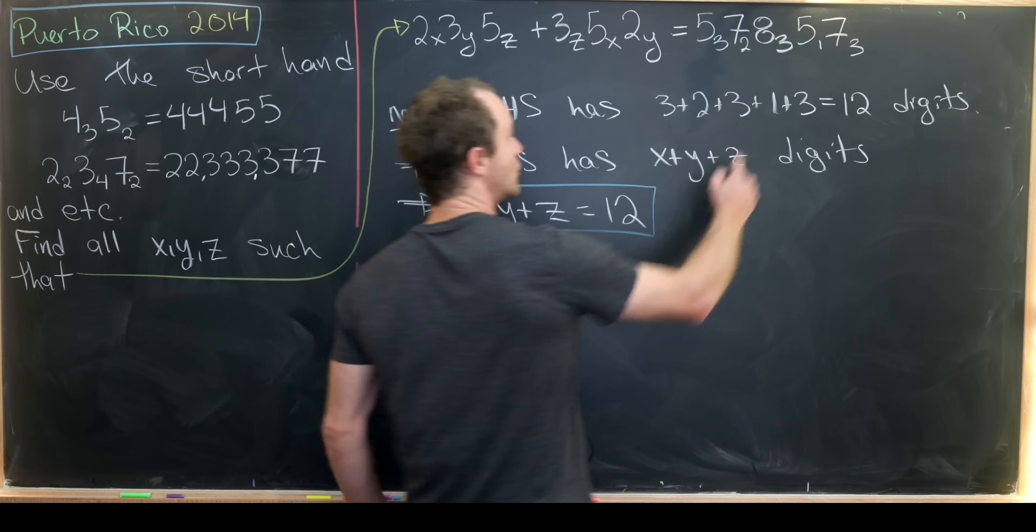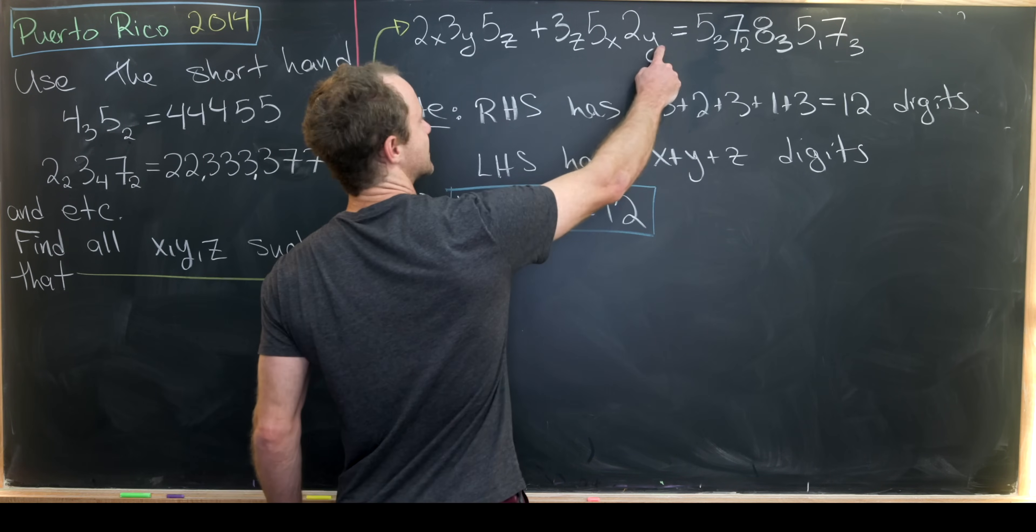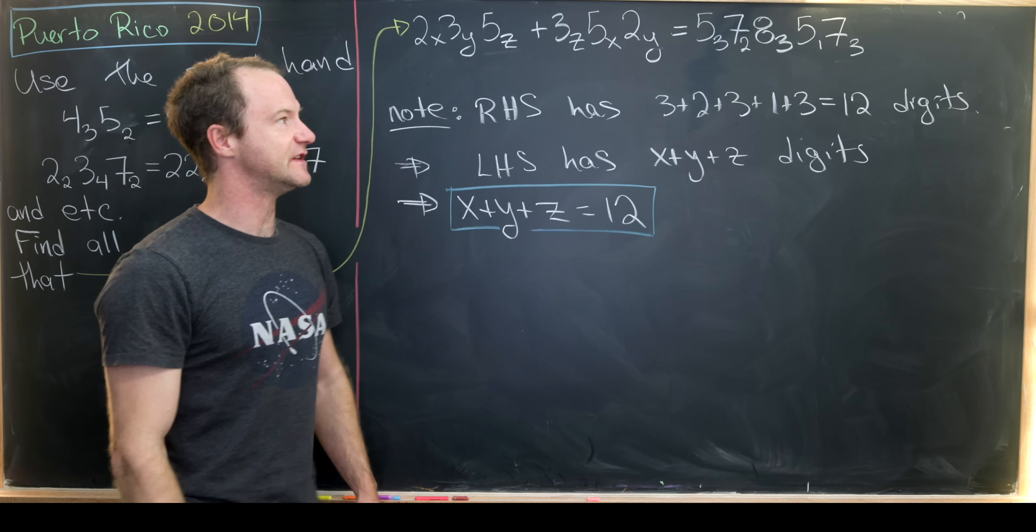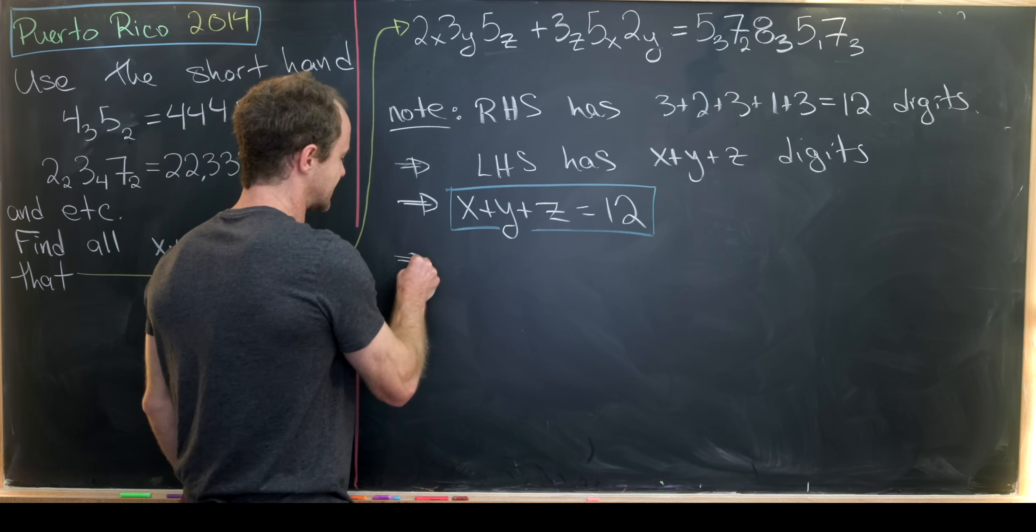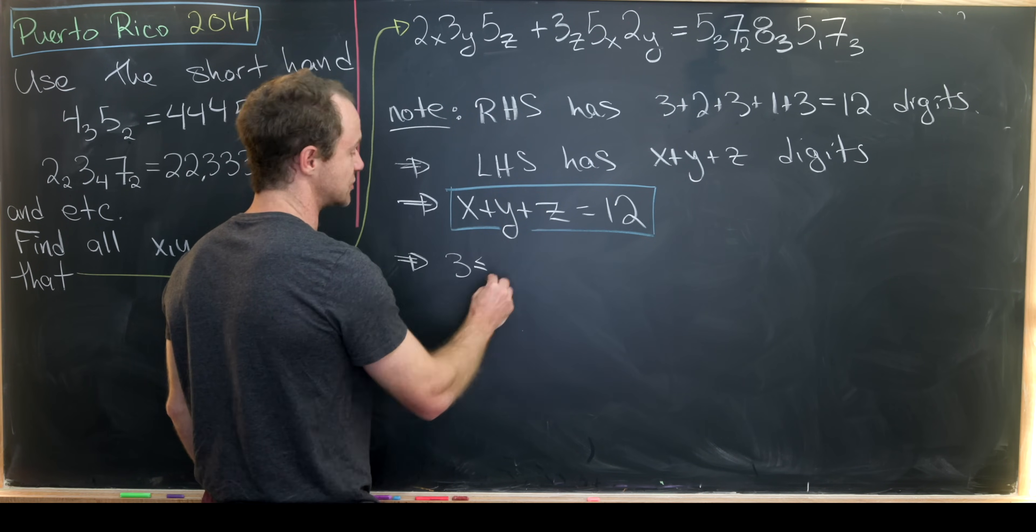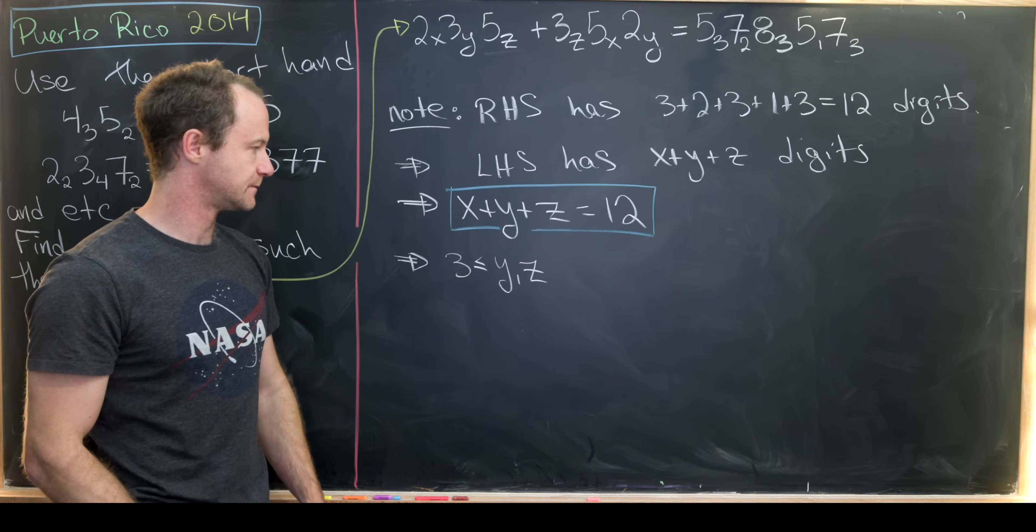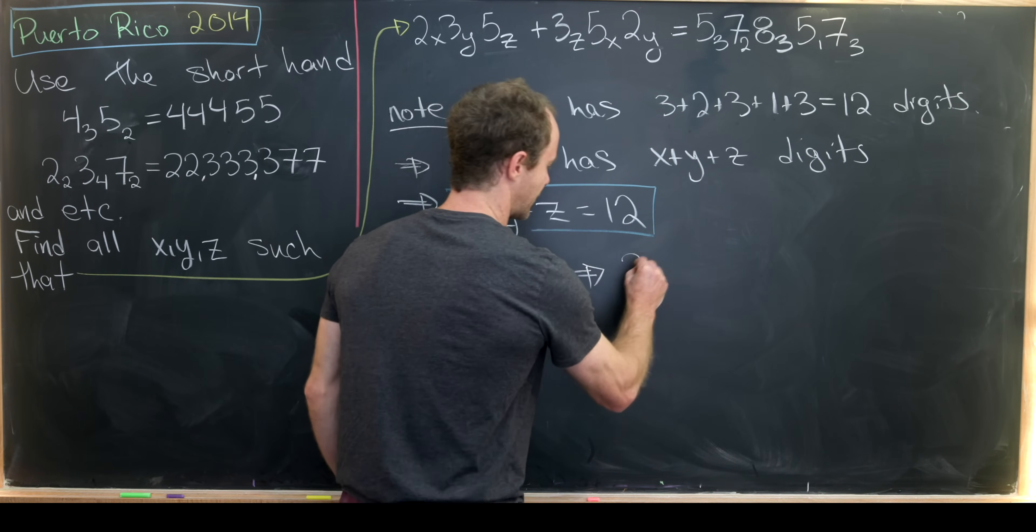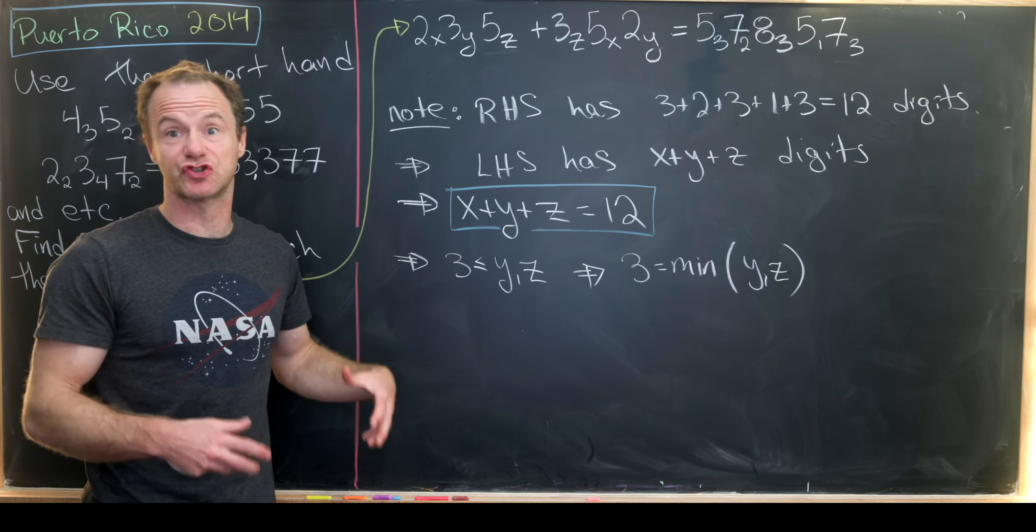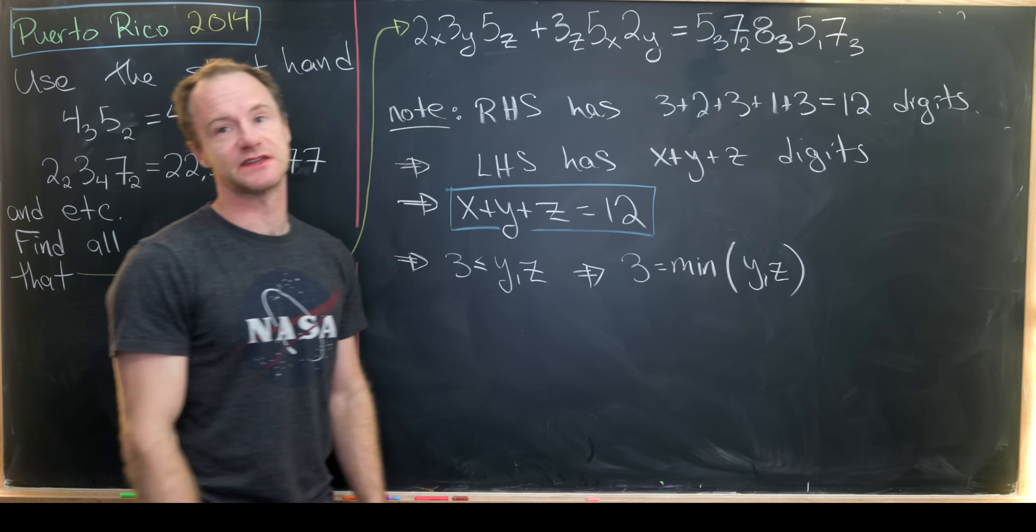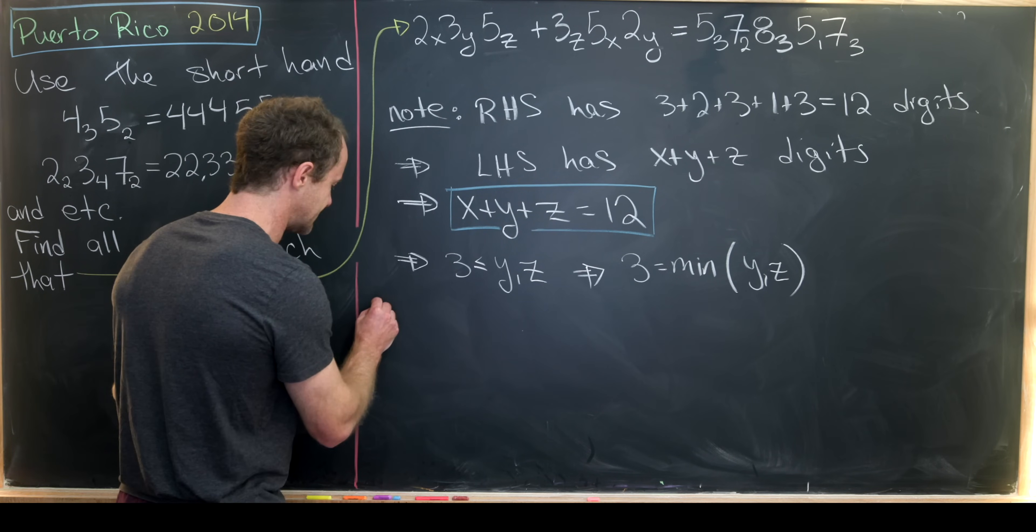Now let's hone in on what's happening with this very last digit here. That very last digit is seven and there are three sevens. The last digit here is two, the last digit here is five. In order to achieve three sevens we have to have at least three fives and at least three twos. That tells us that three is going to be less than or equal to y and z, because this has z fives and this one has y twos. We could put this together and say that three equals the minimum of y and z. We know that both y and z can't be strictly larger than three because then we'd have more than three sevens. So one of them must be equal to three.